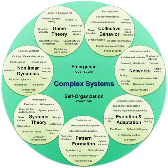Complex systems are systems whose behavior is intrinsically difficult to model due to the dependencies, competitions, relationships, or other types of interactions between their parts or between a given system and its environment. Systems that are complex have distinct properties that arise from these relationships, such as nonlinearity, emergence, spontaneous order, adaptation, and feedback loops, among others.